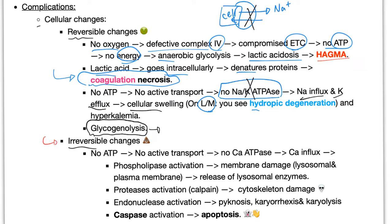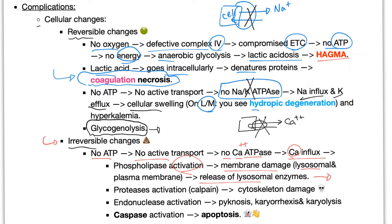Irreversible changes due to hypoxia: no ATP, no active transport, no calcium ATPase pump. Therefore calcium comes in — normally this pump shifts calcium out, but if it's defective calcium enters. Calcium is very active: it will activate and damage the membrane of the lysosome, releasing lysosomal enzymes that cause lysis and destroy everything. Protease activation such as calpain leads to damage of the cytoskeleton. Endonuclease activation leads to pyknosis, karyorrhexis, and karyolysis of the nucleus. Caspase activation leads to apoptosis.